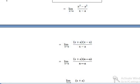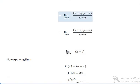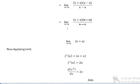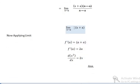Dividing by x minus a, the (x minus a) terms cancel out. So now the limit as x tends to a becomes simply x plus a, and now we can apply the limit.